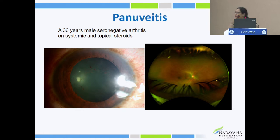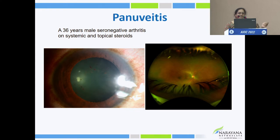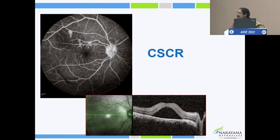On examination, we could see anterior segment inflammation. In addition, there was significant vitreitis and macular edema. We wanted to know what was happening and why he was not responding. The fundus findings were not classical, but when we did the OCT, it showed serous detachment — something like a CSR picture.